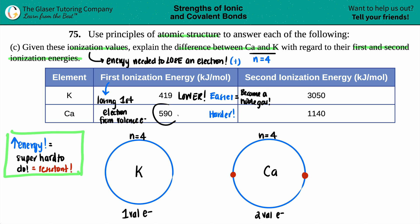For calcium's first ionization energy, you still lose one electron, but when you lose it you still have one valence electron left. So it wasn't really favorable for calcium - that's why its first ionization energy is a little bit higher than potassium's, because you lost one electron but you're still not a noble gas.